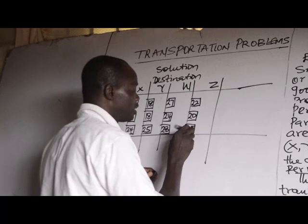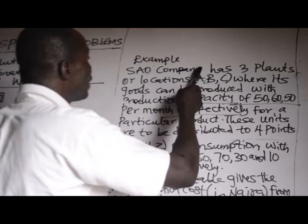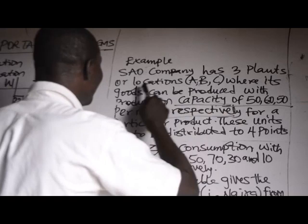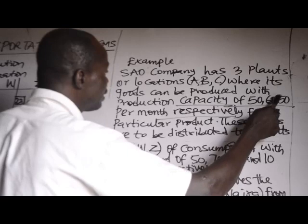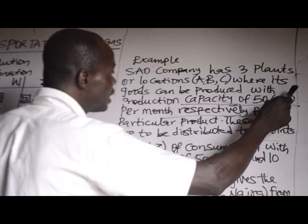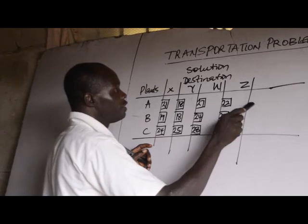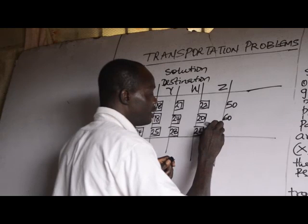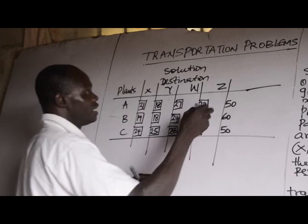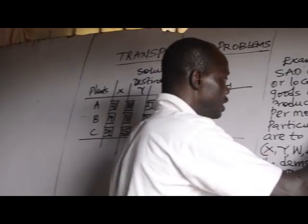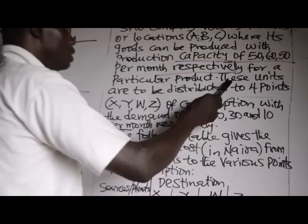Back to the question: SAO Company has three plants A, B, C with production capacity of 50, 60, and 50 per month respectively. So A has supply of 50, B has 60, and C has 50. This is the supply — that is, the capacity.